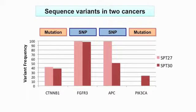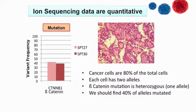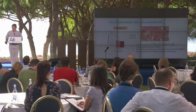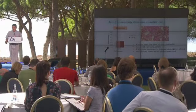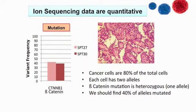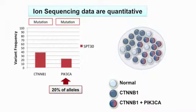In all cases we found the beta-catenin mutation. If we focus on two cases, we know this tumor type has 80 percent cancer cells, and each cell has two alleles. Because beta-catenin is heterozygous, meaning only one allele is affected, we should find 40 percent of mutated alleles — and this is exactly the case.